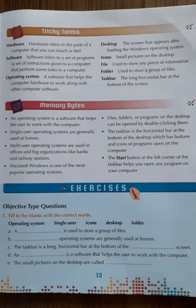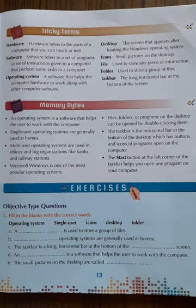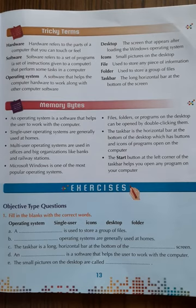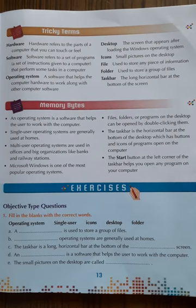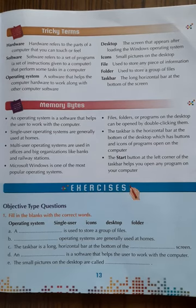Now let's review some important terms from this chapter. Hardware refers to parts of a computer that you can touch or feel. Software is a program that performs tasks in the computer. An operating system is software that helps the computer hardware work along with other computer software. Examples of operating systems are Windows, Macintosh OS, Unix, and Linux.